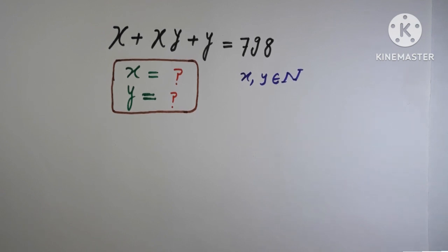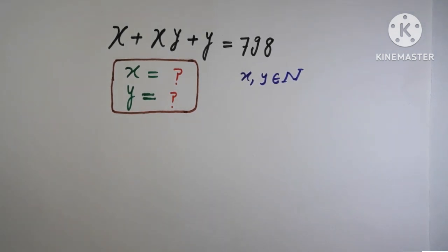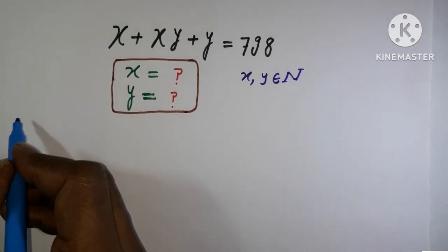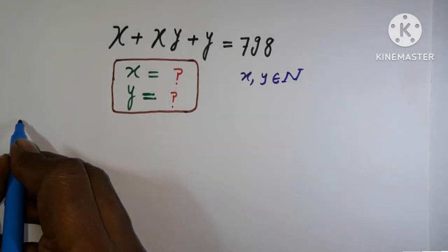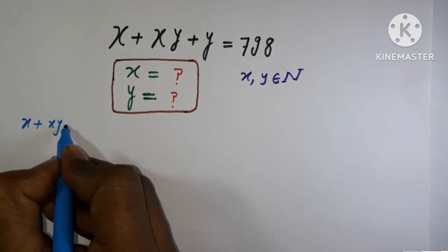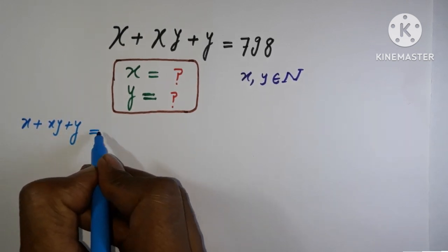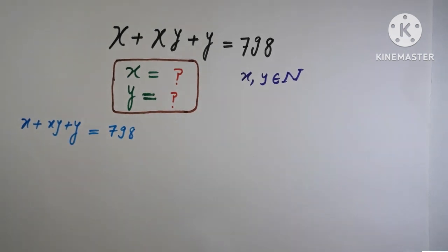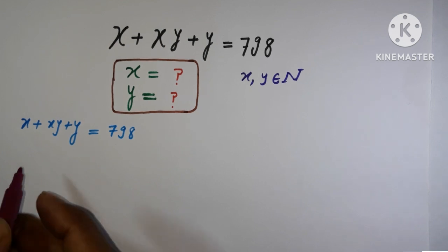Before going further, please don't forget to give us a thumbs up — thank you so much. So here we have to proceed by writing the equation x plus xy plus y equal to 798, and we are going to factorize it.